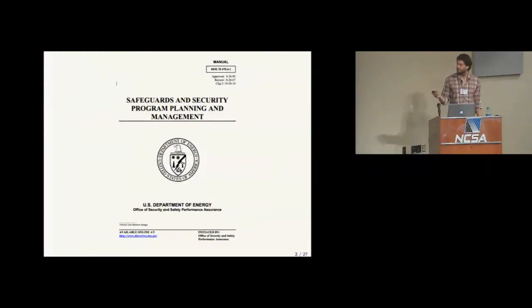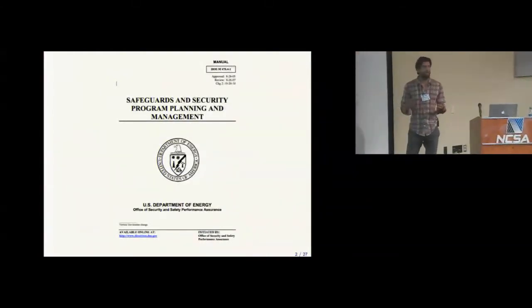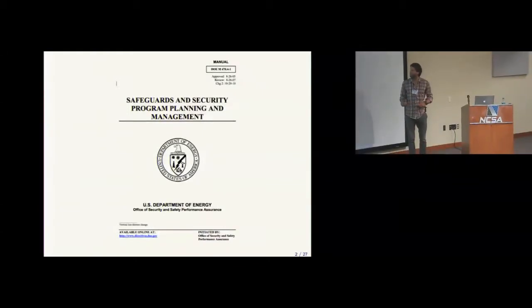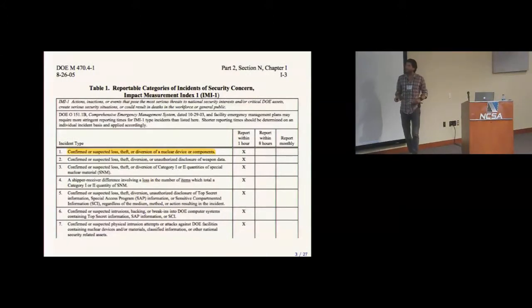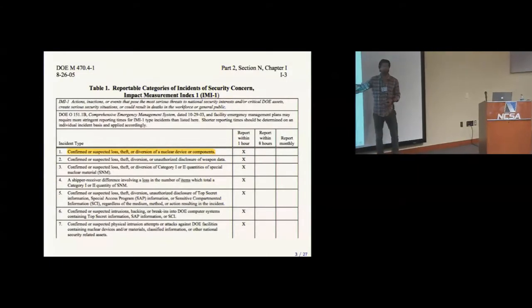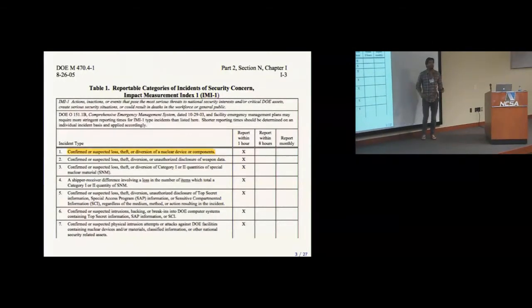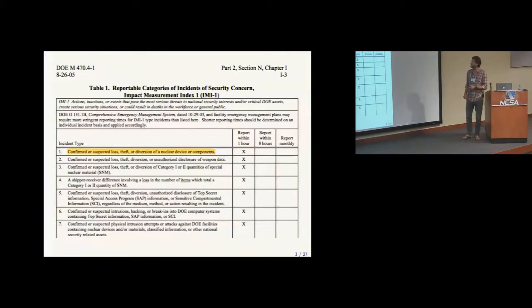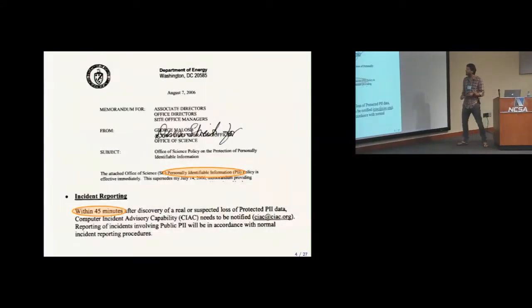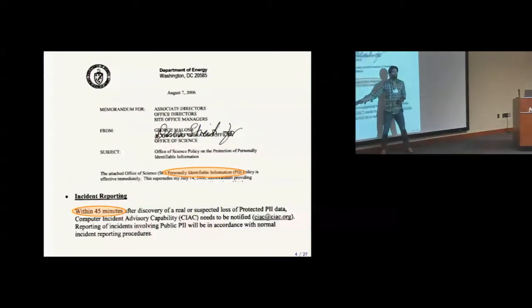So this here is a document from the Department of Energy containing a bunch of policy guidelines, what to do in certain security-critical circumstances. And if you happen to lose or you got stolen a nuke, you have to report that to the government within an hour. So they give you an hour to report loss of a nuke. Now, PII data, credit cards, anything, you have to report within 45 minutes.